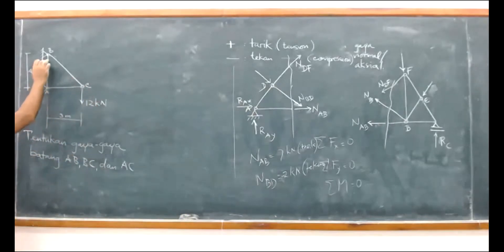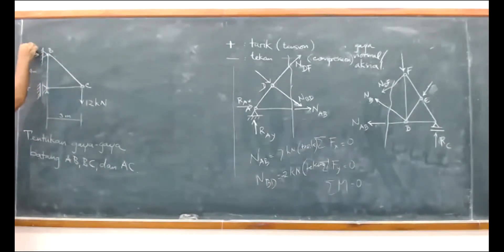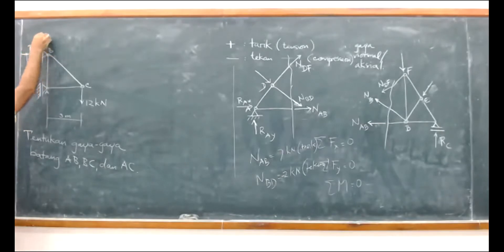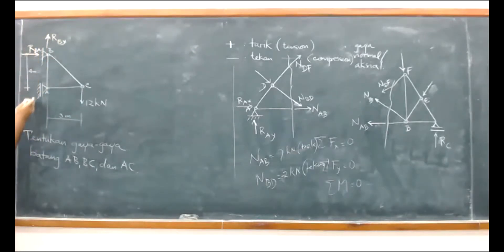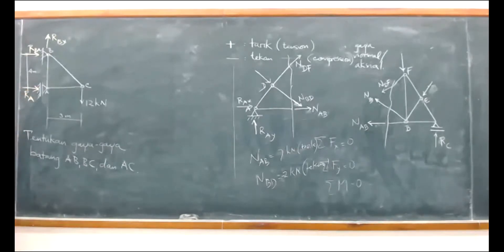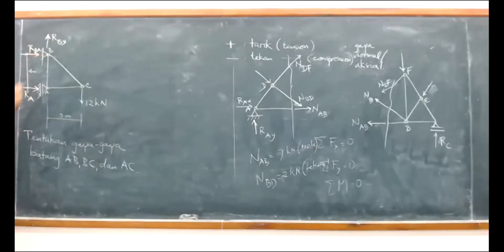Kalau ini tumpuannya sendi, artinya harus ada RBX dan RBY di sini. Dan di bawah A ini roll, rollnya roll vertikal begini, jadi reaksinya horizontal: RA. Ini ada reaksinya RA, RBX, dan RBY.